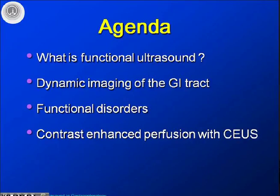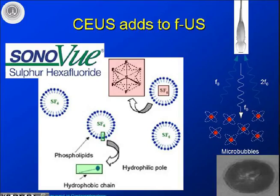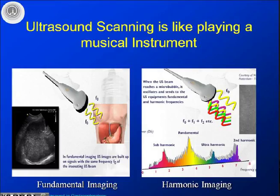Contrast-enhanced perfusion is really adding new values to functional imaging. The main drug we are using, as you all know, is SonoVue — sulfur hexafluoride. These bubbles vibrate, but you can use the scanner and manipulate the amplitude in order to make these bubbles burst whenever you like. As one presenter showed yesterday, you can use the ultrasound scanner like a musical instrument — by turning the knobs you can really fine-tune how these microbubbles behave. This relates to harmonic imaging: ordinary use is fundamental imaging where you send out one frequency and image on that same fundamental frequency. However, in contrast-enhanced ultrasound imaging we apply harmonic imaging — we usually play our instrument at the second harmonic wave.